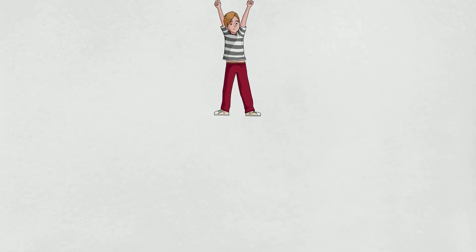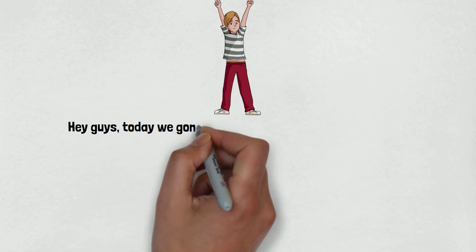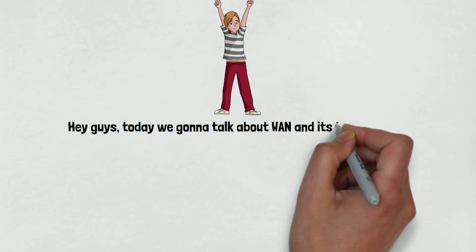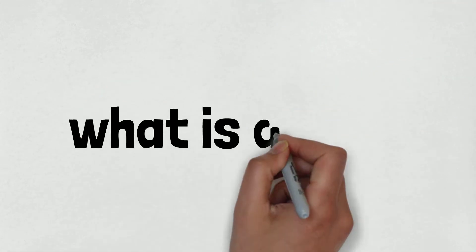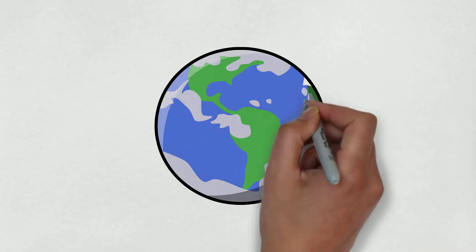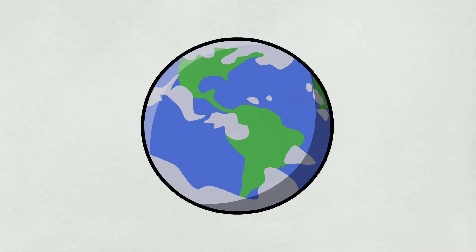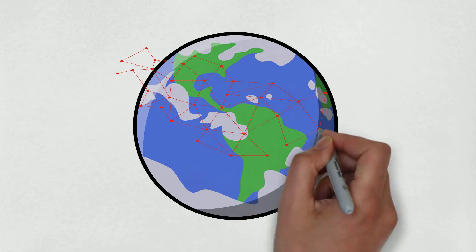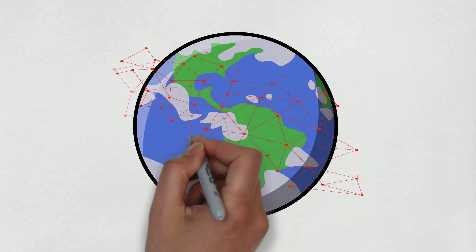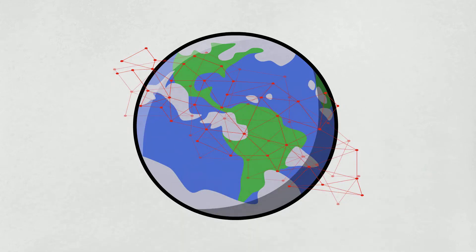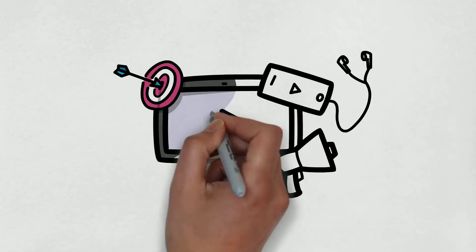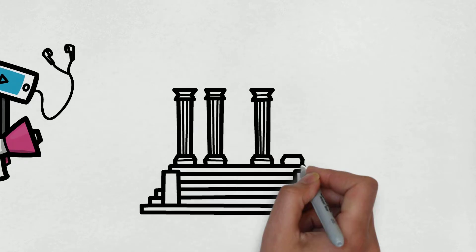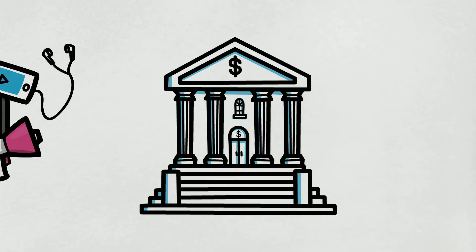Hey guys, today we're going to talk about WAN and its technologies. A Wide Area Network, or WAN, is a geographically distributed telecommunications network that interconnects multiple networks. WANs allow users to share access to applications, services, and other centrally located resources.